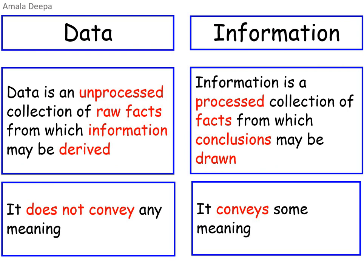Data is an unprocessed collection of raw facts from which information may be derived, whereas information is a processed collection of facts from which conclusions may be drawn. Data does not convey any meaning, but information conveys some meaning.